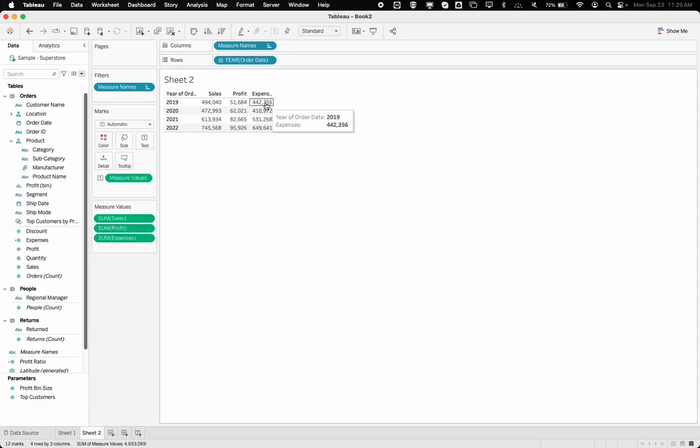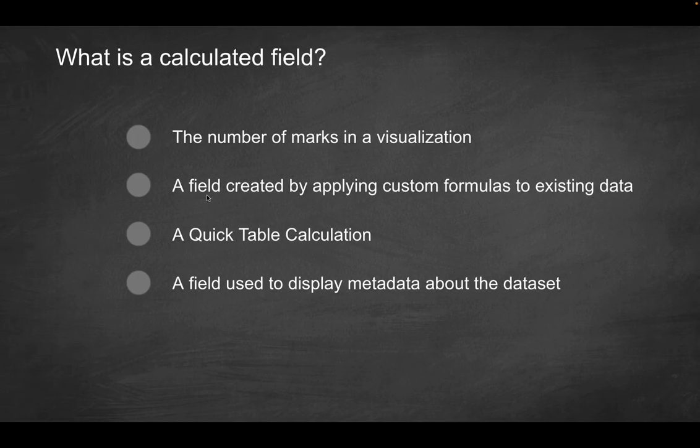Now that I have my expenses, I can drag that here and now you can see my year over year expenses. So my sales was 494,000 and let's just re-sequence this, my expenses were 442,000 and as a result now my profit is this much. So what did we do here? We basically created a field by applying a custom formula to the existing data. So that's what a calculated field is.